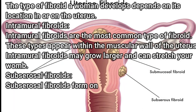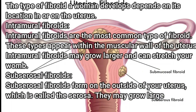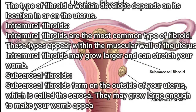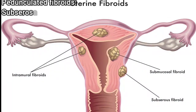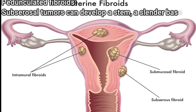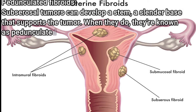Subserosal fibroids form on the outside of your uterus, which is called the serosa. They may grow large enough to make your womb appear bigger on one side. Subserosal tumors can also develop a stem — a slender base that supports the tumor — and when they do, they're known as pedunculated fibroids.